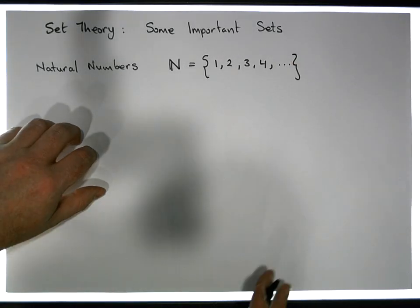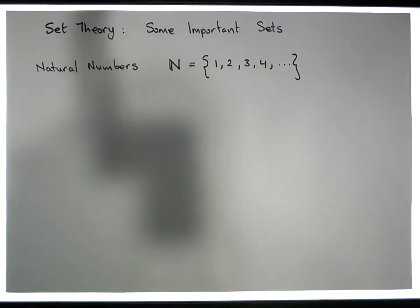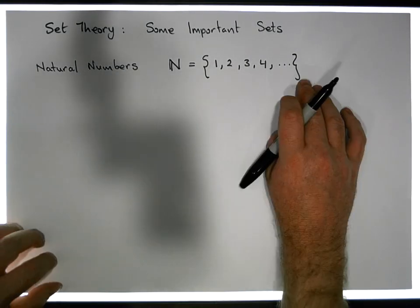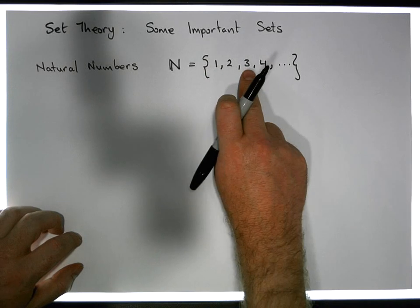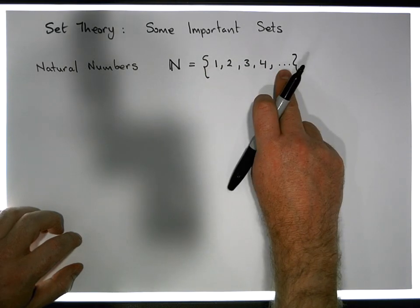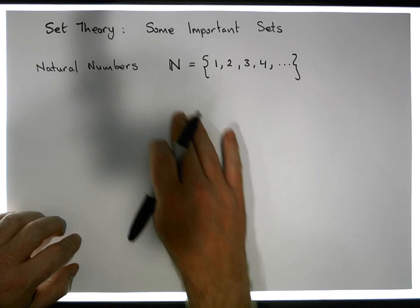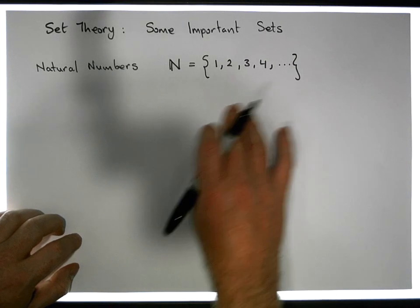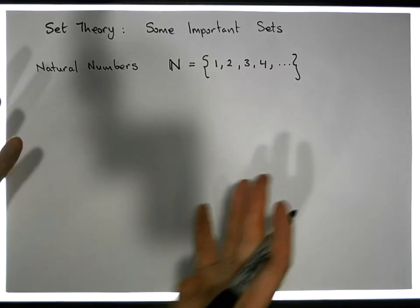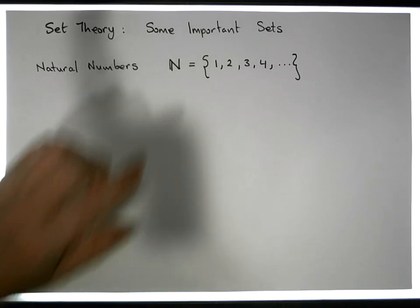We could define the natural numbers using what's known as a successor function, but we're just going to define them in this format where we list the actual elements within the set. The three dots, known as an ellipsis, means that this pattern continues. This is what's known as roster notation.